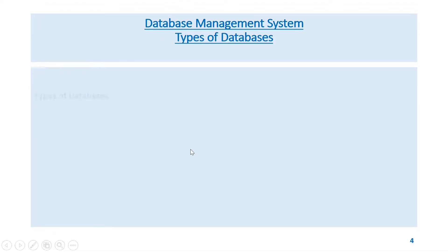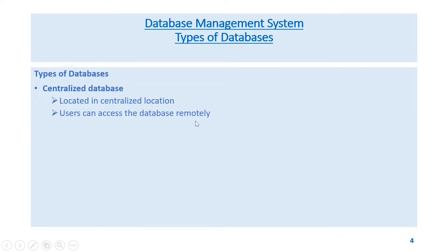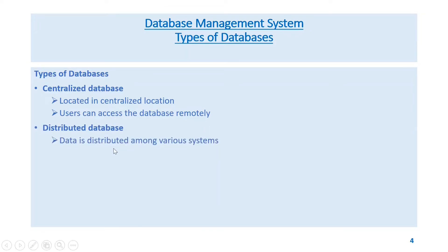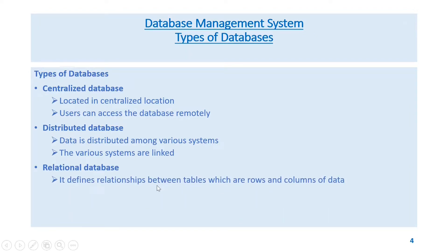Types of databases: Centralized database — located in a centralized location; users can access the database remotely. Distributed database — data is distributed among various systems, and the various systems are linked. Relational database — defines relationships between tables, which are rows and columns of data.